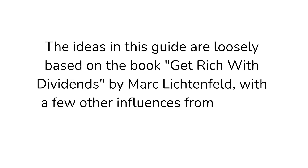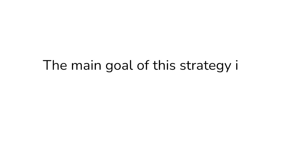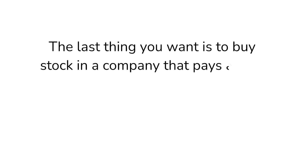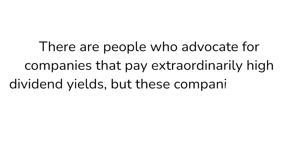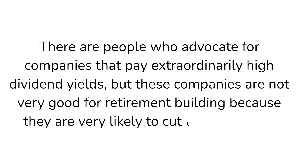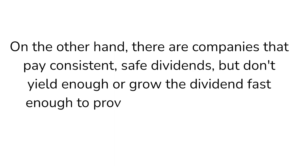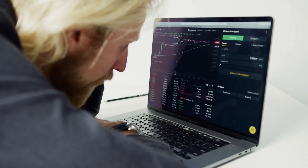The ideas in this guide are loosely based on the book Get Rich with Dividends by Mark Lichtenfeld, with a few other influences from studies and research papers thrown in. I highly recommend you read this book after you finish the video, and there's a link in the description to buy it on Amazon. The main goal of this strategy is to find high quality companies that pay sustainable, growing dividends. The last thing you want is to buy a stock in a company that pays a high dividend yield, only to have the company cut the dividend two years later and the stock price plummet. Our goal is to strike a balance between high yield and high growth to maximize our returns.